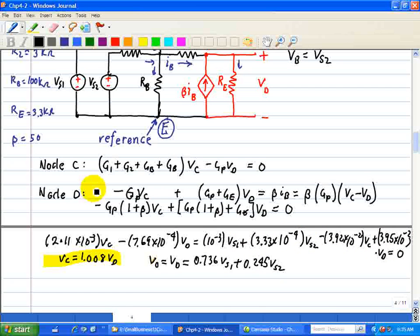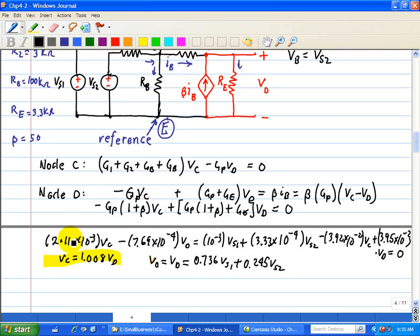Finally we have VO equals VD in this example here. And we note that when we use node D, we have VC equals 1.008 VD after you substitute the values. And then this finally yields the result that VO is a combination of VS1 and VS2.